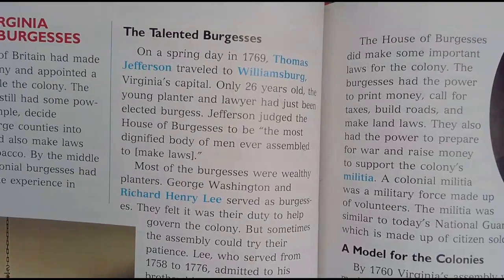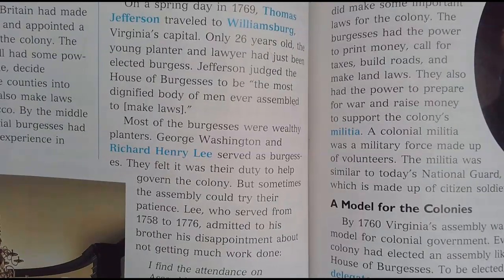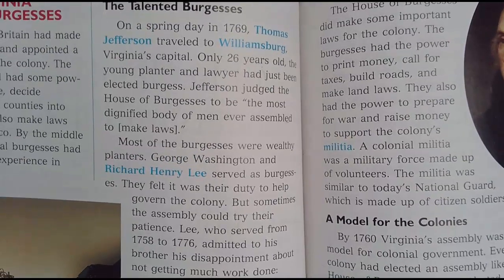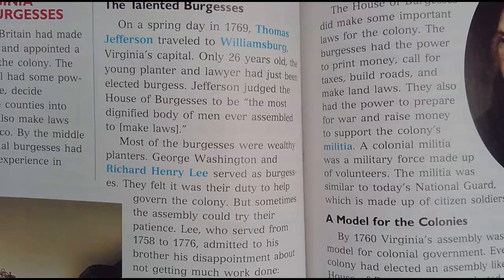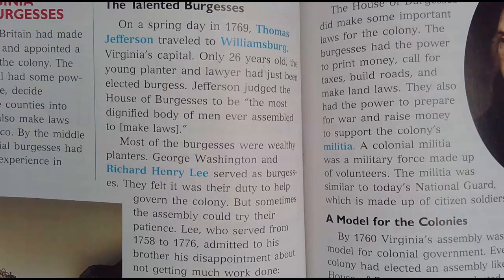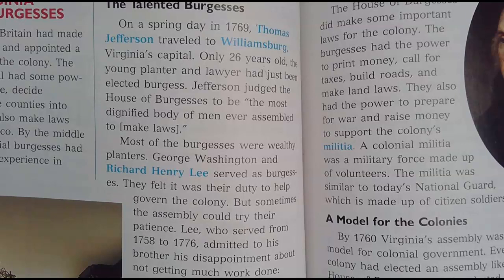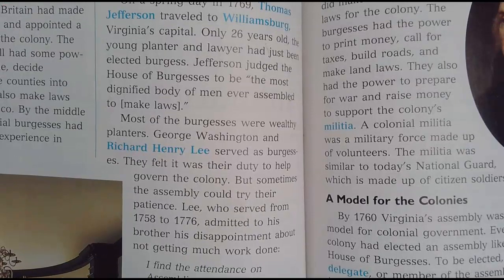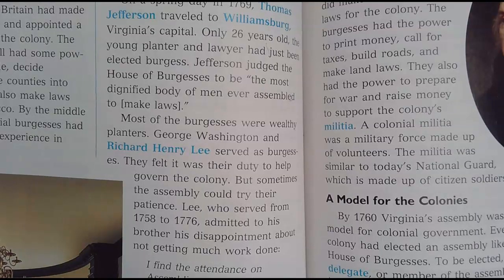On a spring day in 1769, Thomas Jefferson traveled to Williamsburg, Virginia's capital. Only 26 years old, the young planter and lawyer had just been elected Burgess. Jefferson judged the House of Burgesses to be the most dignified body of men ever assembled to make laws. Most of the Burgesses were wealthy planters — George Washington and Richard Henry Lee served as Burgesses. They felt it was their duty to help govern the colony.